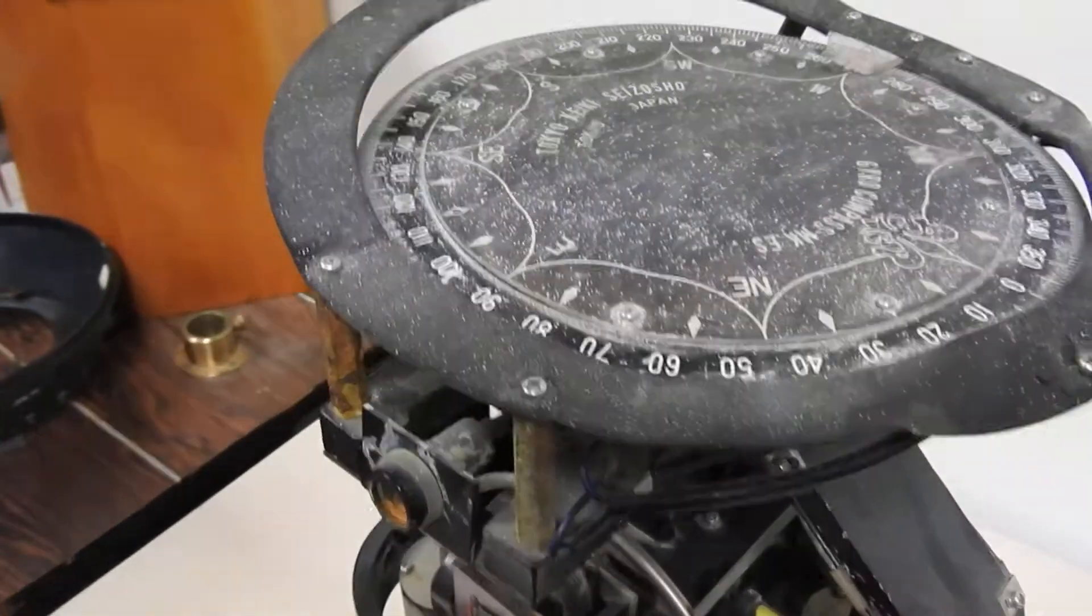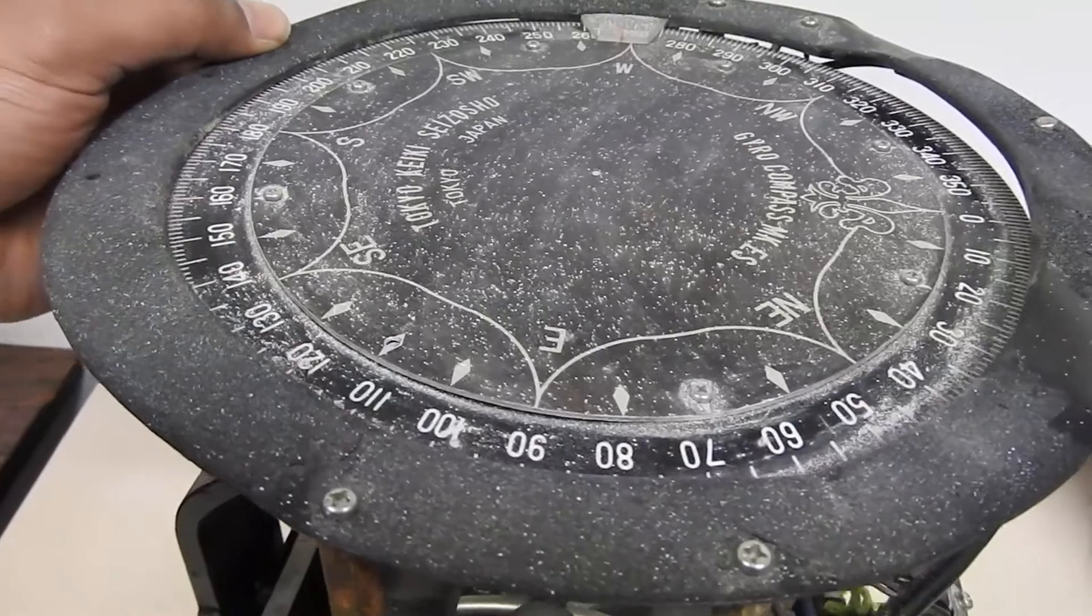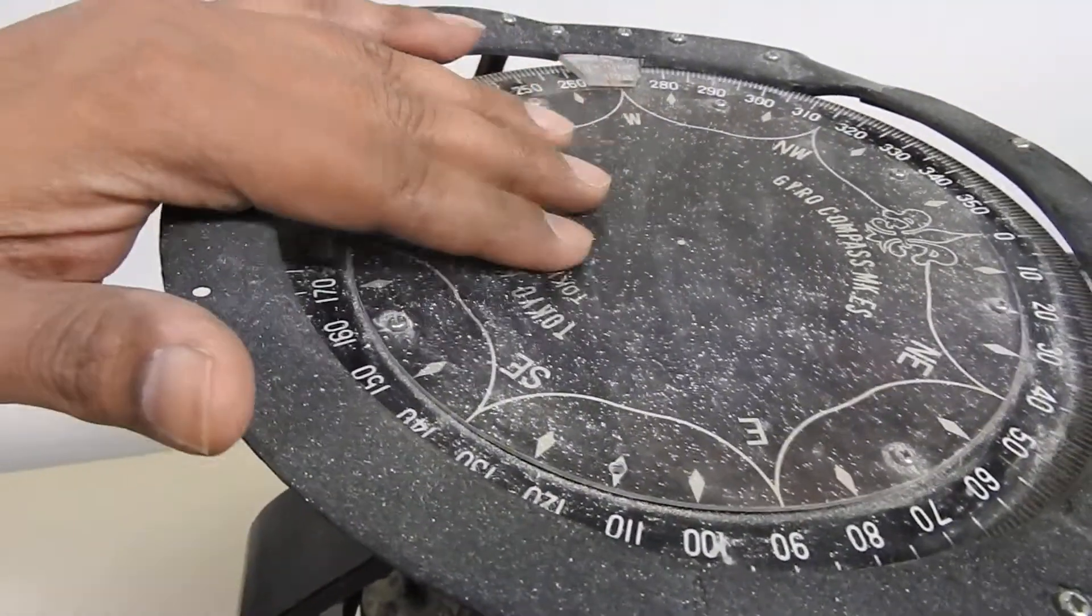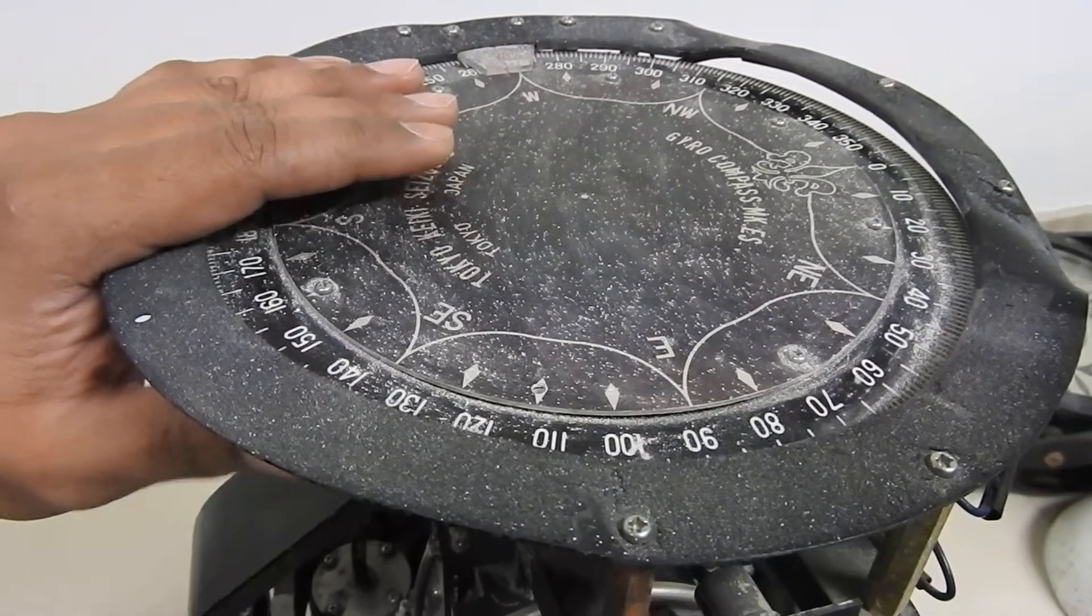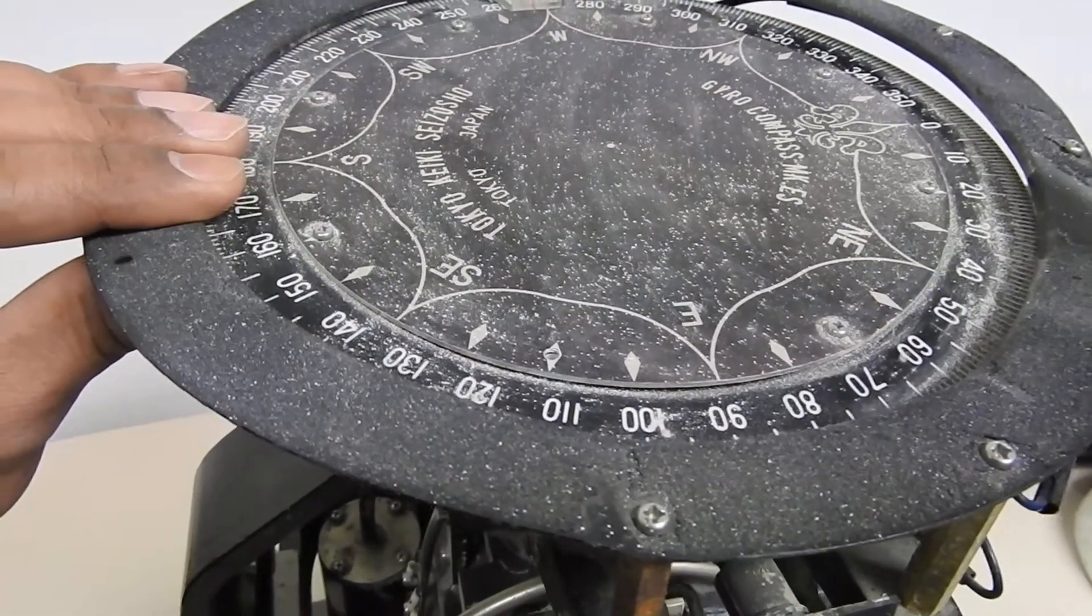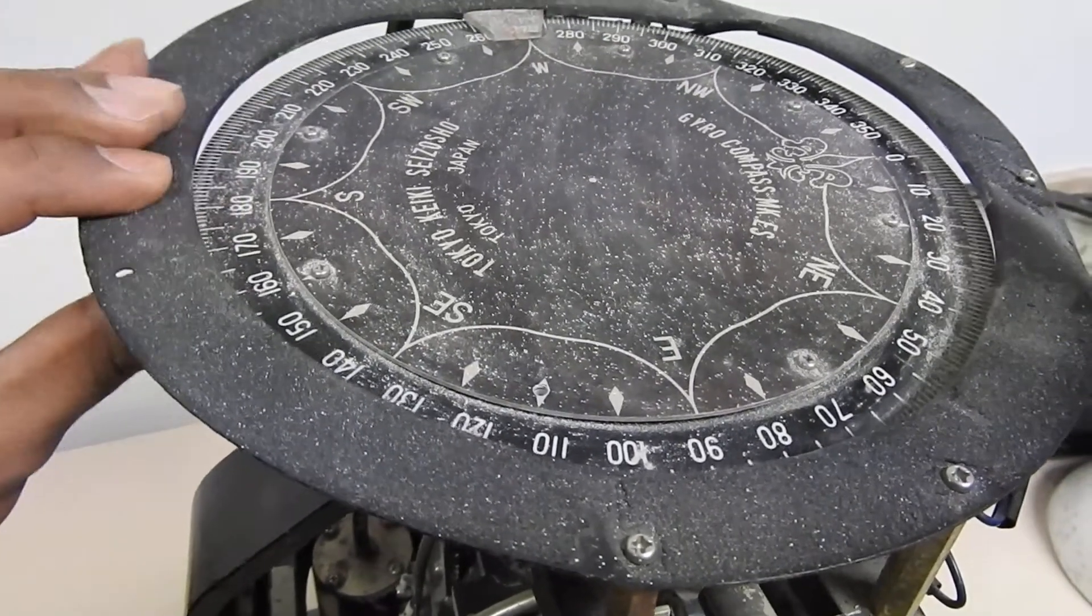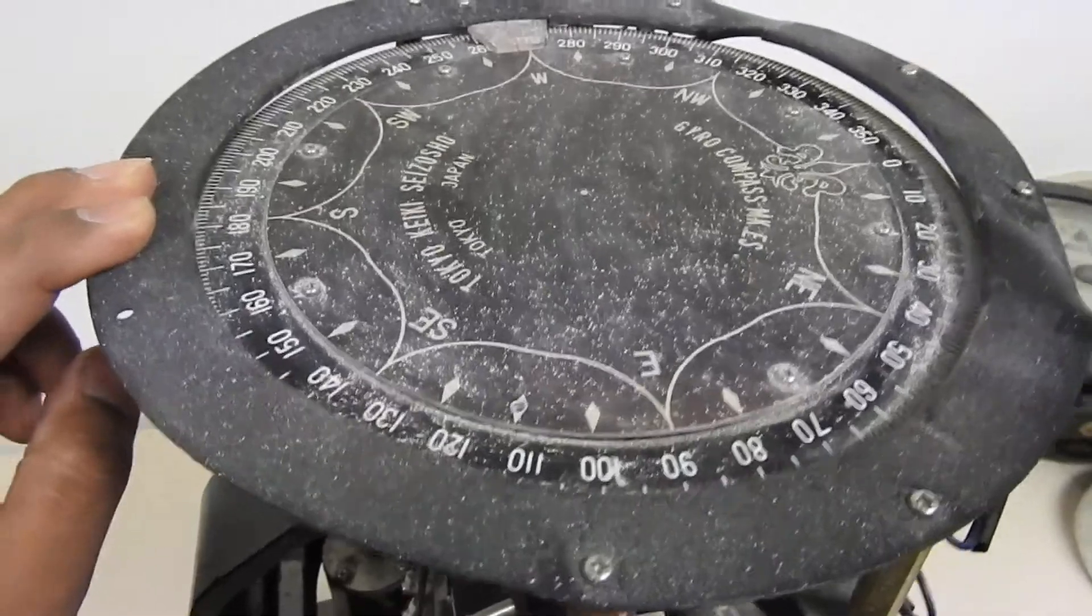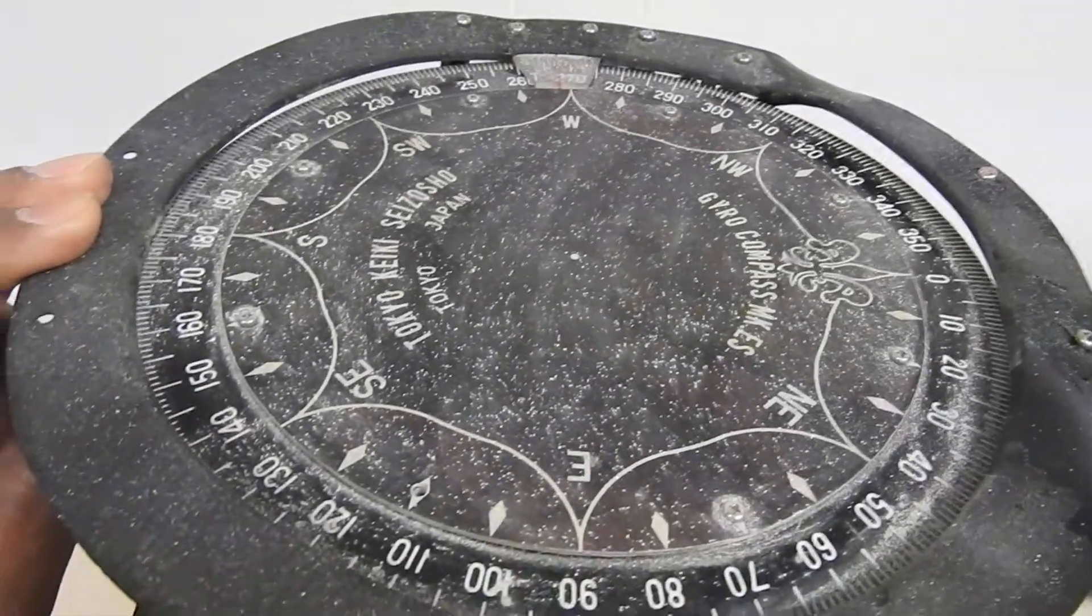Alright, so what you see here is a dilapidated gyro compass, not in a good shape. This on top here is the gyro compass card that you can see is marked with the readings. This gyro compass card provides the heading to the mariners, of course, for steering purposes. This is the primary compass used on ships for steering purposes.